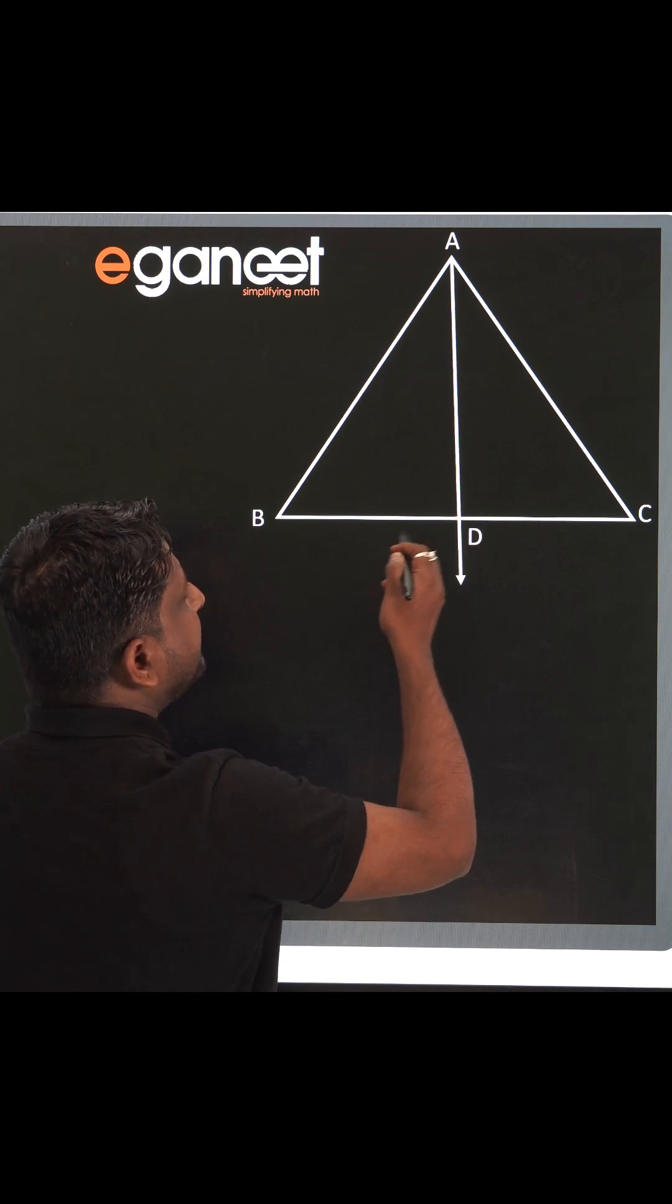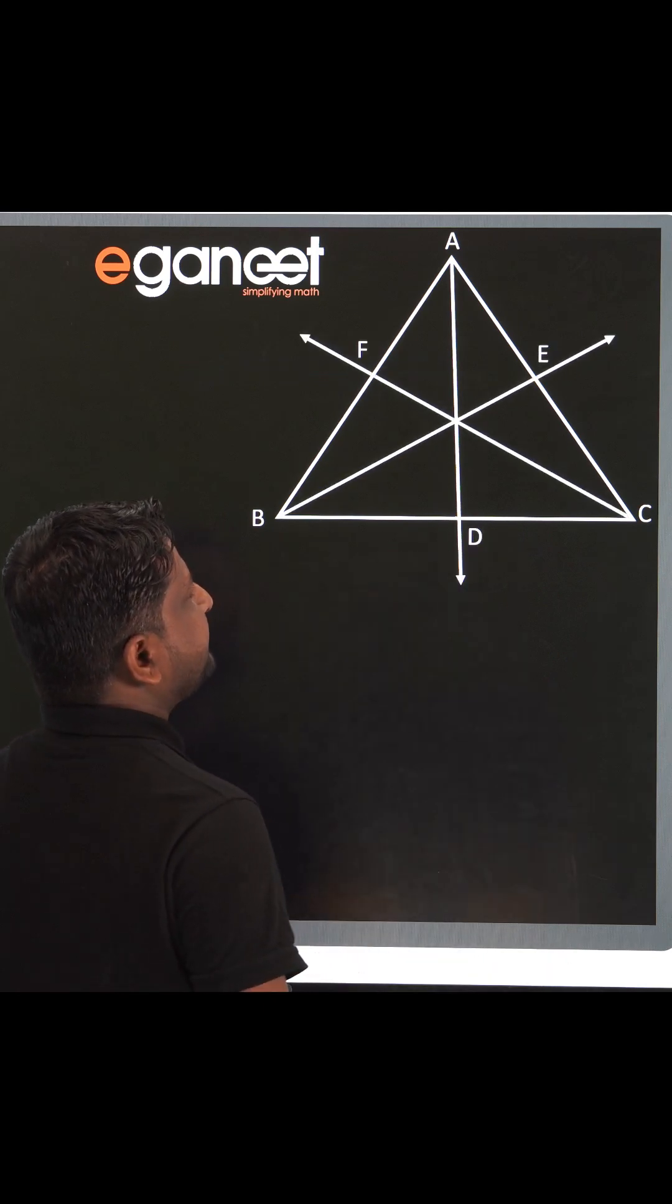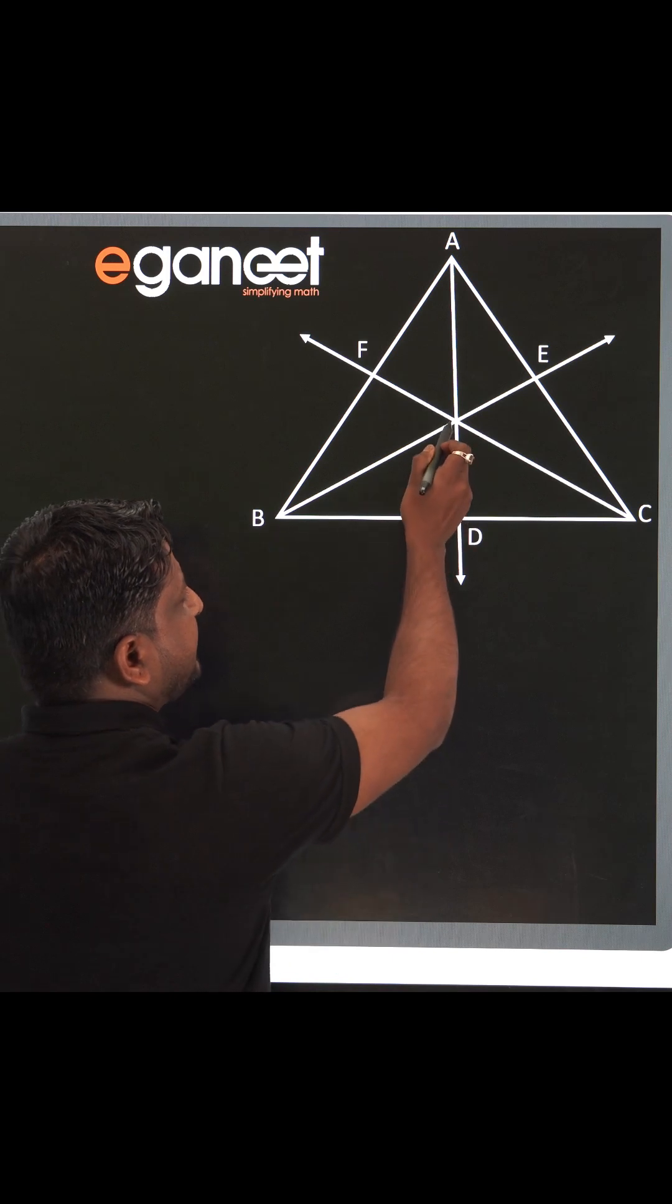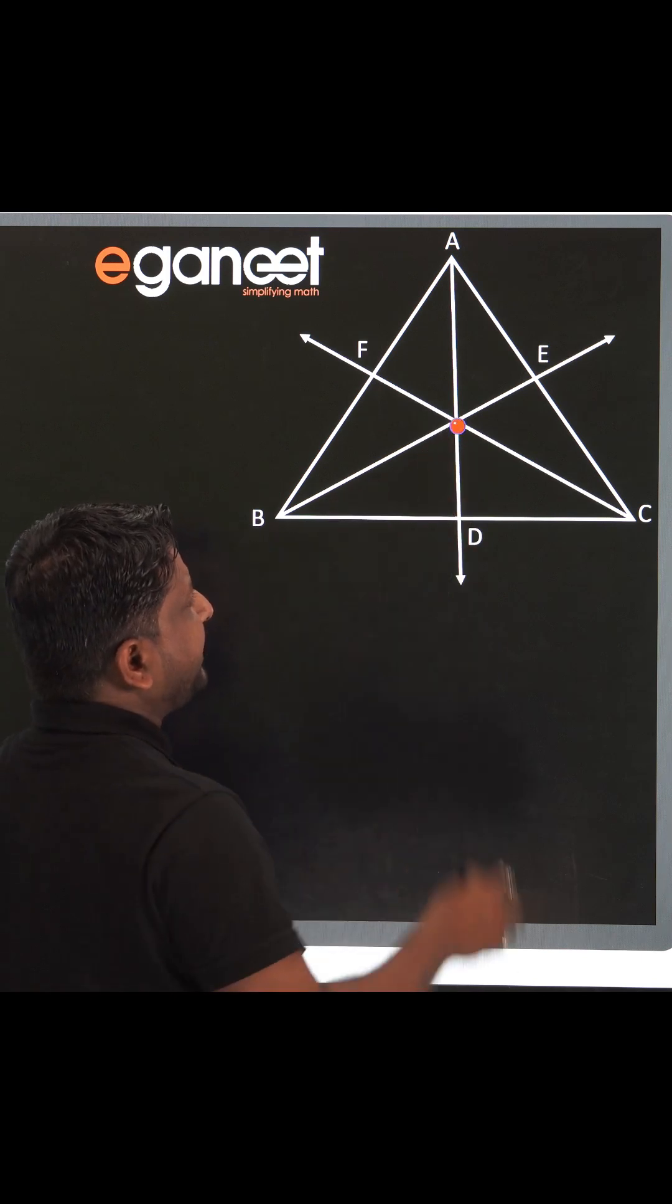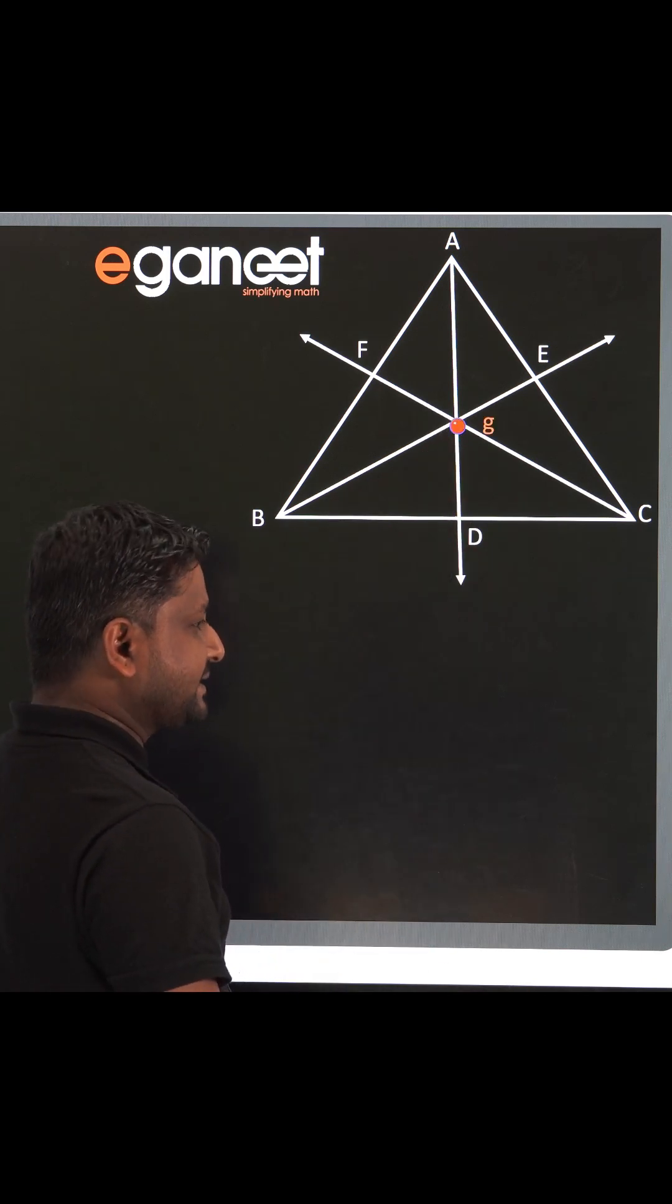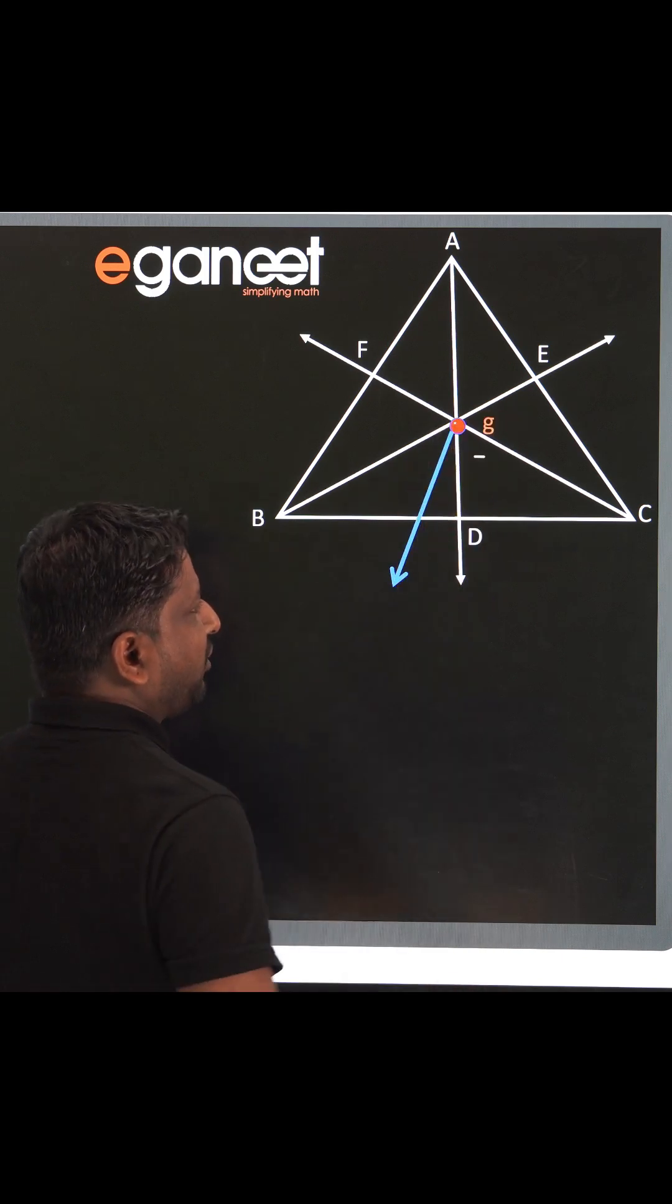Similarly, let BE be the median and CF is also the median. Now what you can see is that this is the point of intersection of the medians and this point is called as the centroid of the triangle. It is generally denoted by small g.